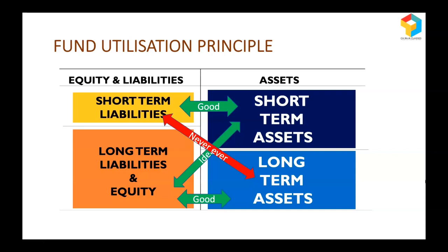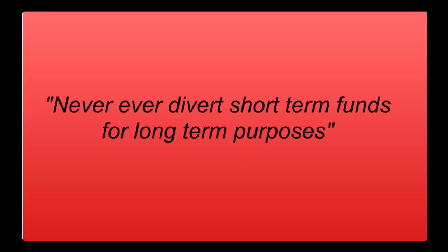If the loan amount with a bank has become overdue, they will wait for a maximum of 90 days. Then they will declare the account as non-performing asset and go for recovery measures. That's why I say it becomes the beginning of the end of a business. So never ever divert short-term funds for long-term purpose.